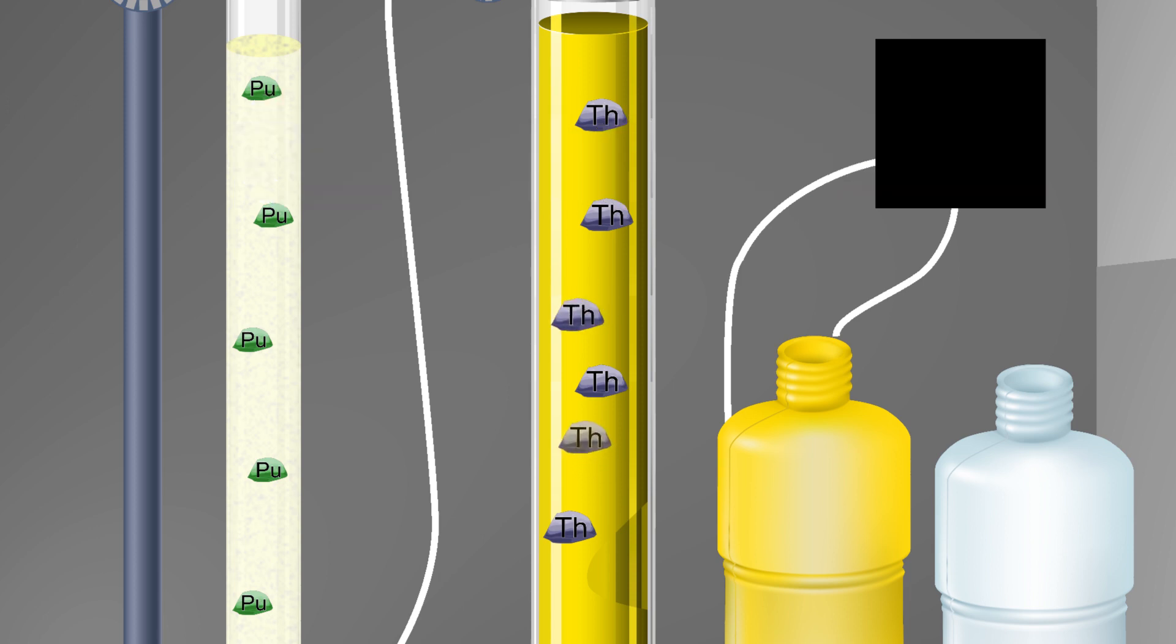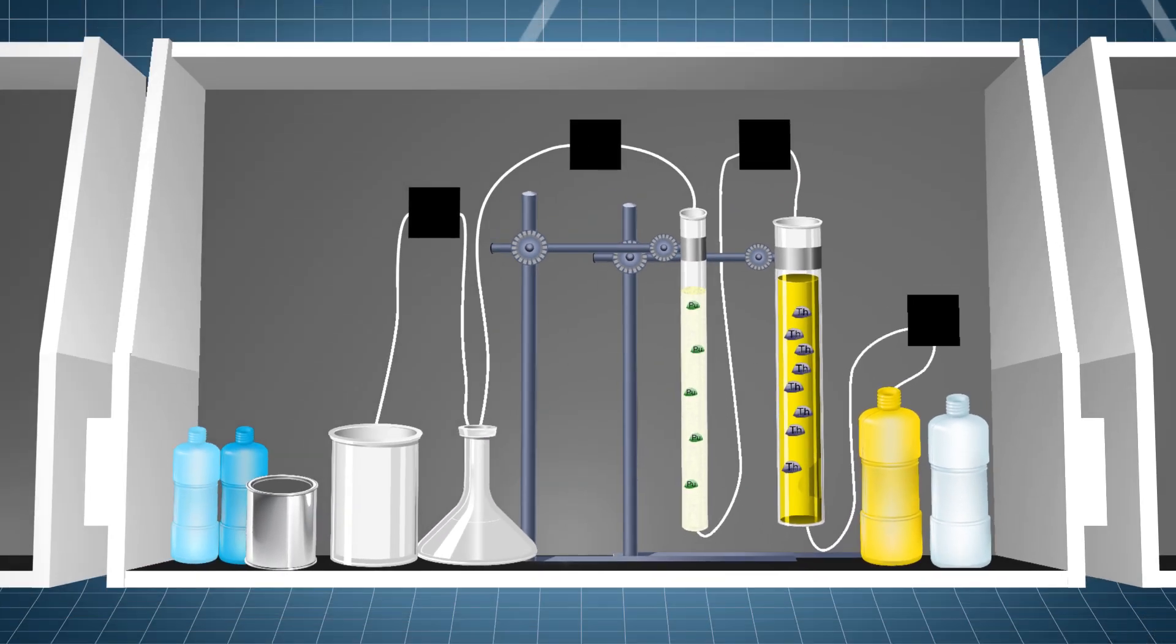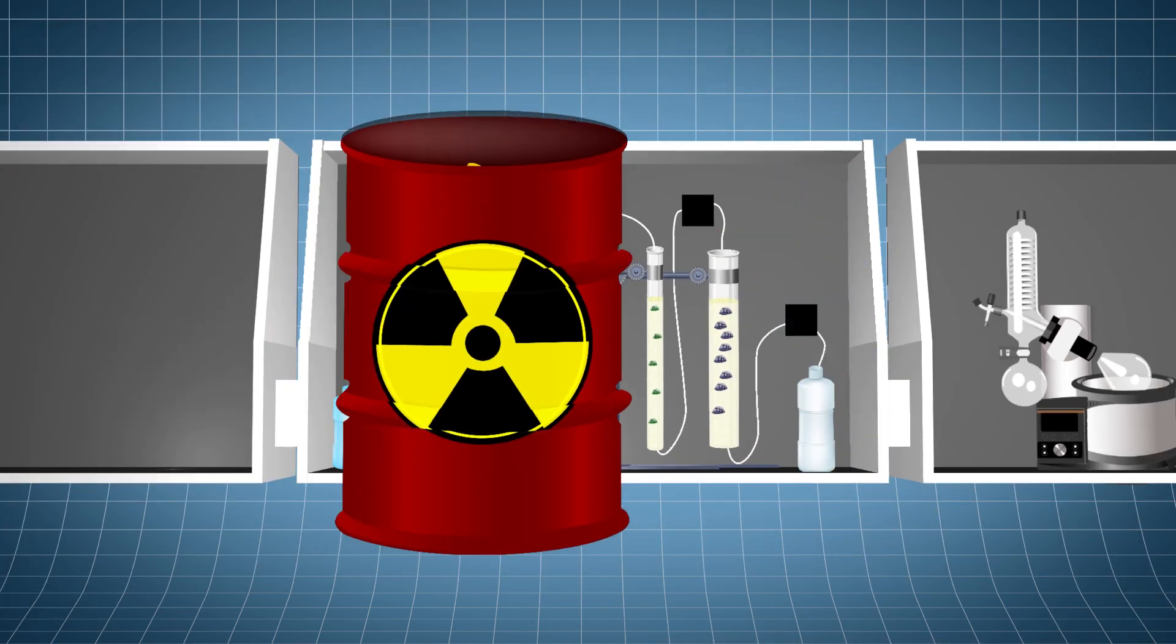Thorium couldn't stick to anything previously because the solution was being pumped too fast, but this time, it has plenty of time to stick to the extraction resin. After the solution is done passing through the column, uranyl nitrate is the only thing left, so it's pumped into a reservoir that will be put into a grout drum for disposal.